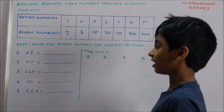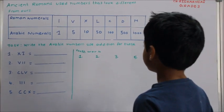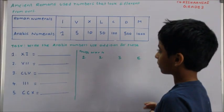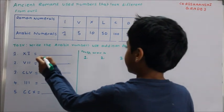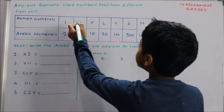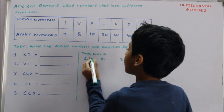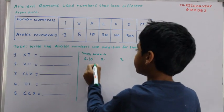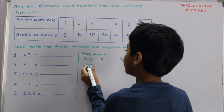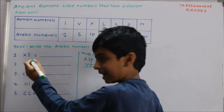Task 2: Write the Arabic numbers. Use addition for these. XI — X means 10, I means 1. It will be 11 because 10 plus 1 is 11. So we shall write 11 on the blank.